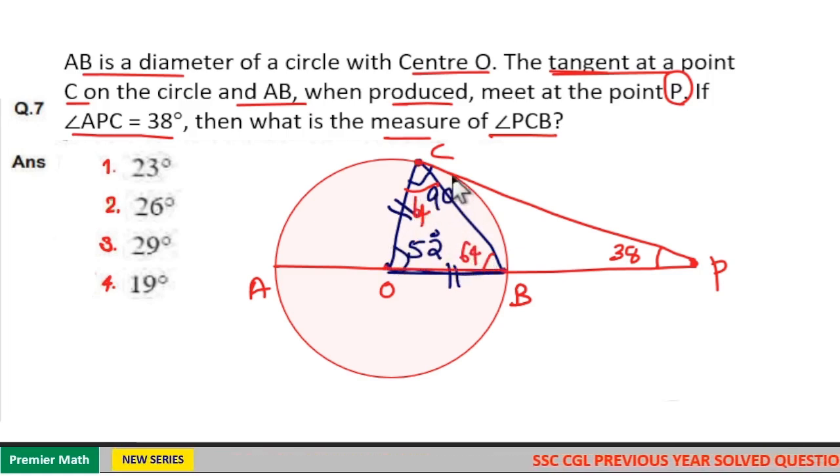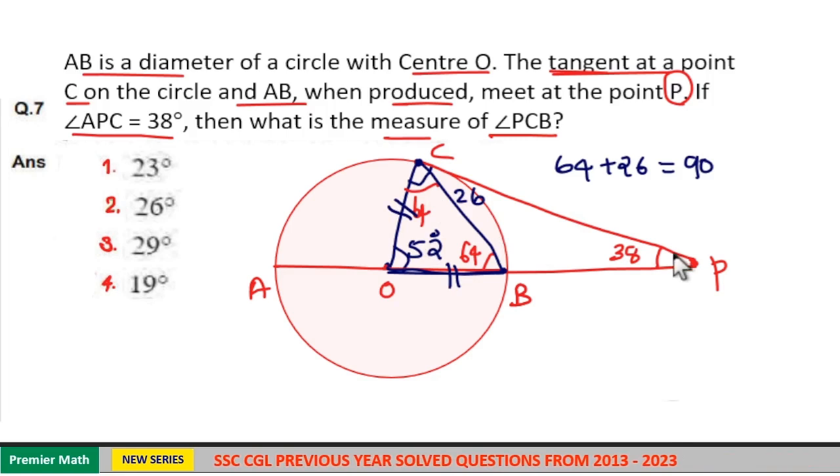In that case, if this full angle is 90 degrees, that is we know this angle is 90 degrees. So if this is 64, this should be 26, because 64 plus 26 is equal to 90 degrees. So here angle PCB is equal to 26 degrees. Option 2 is your answer.